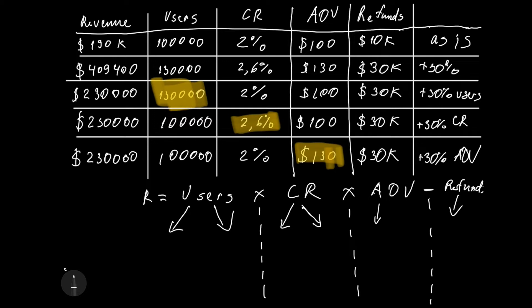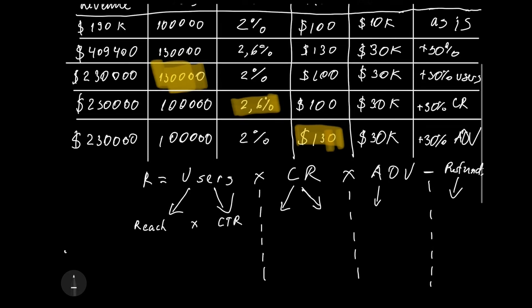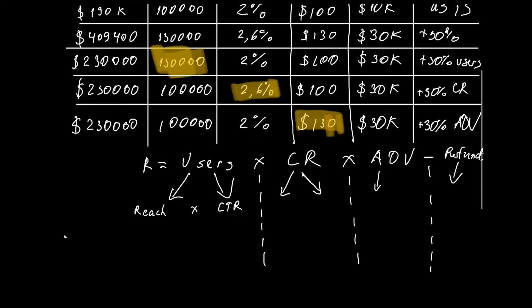So the first pillar is users. We can break down users by reach times CTR. For reach it is important to understand our customer segments really good and our top of the funnel traffic sources, middle of the funnel traffic sources, and bottom of the funnel traffic sources. They are split by channels and so on.